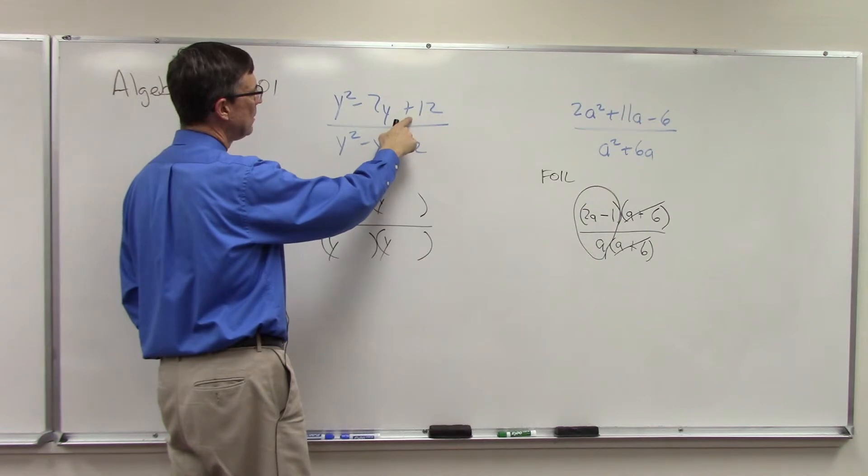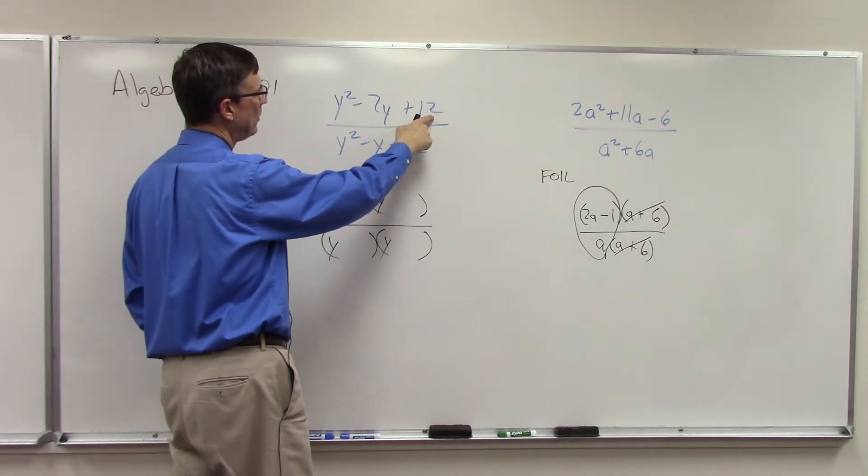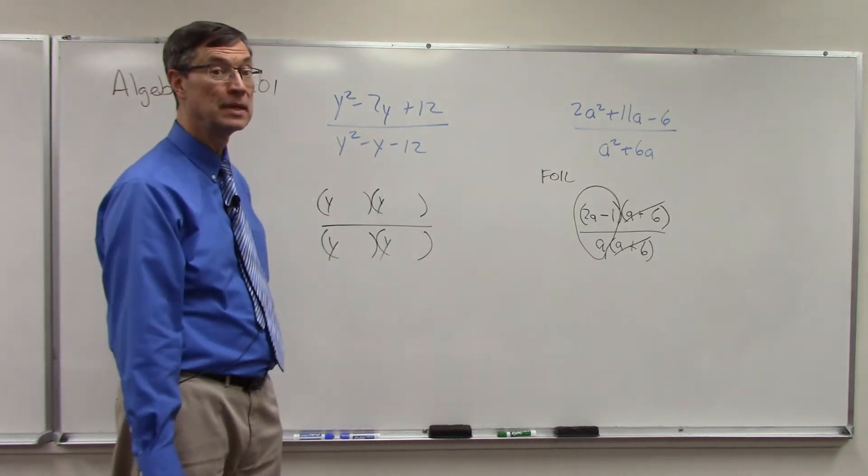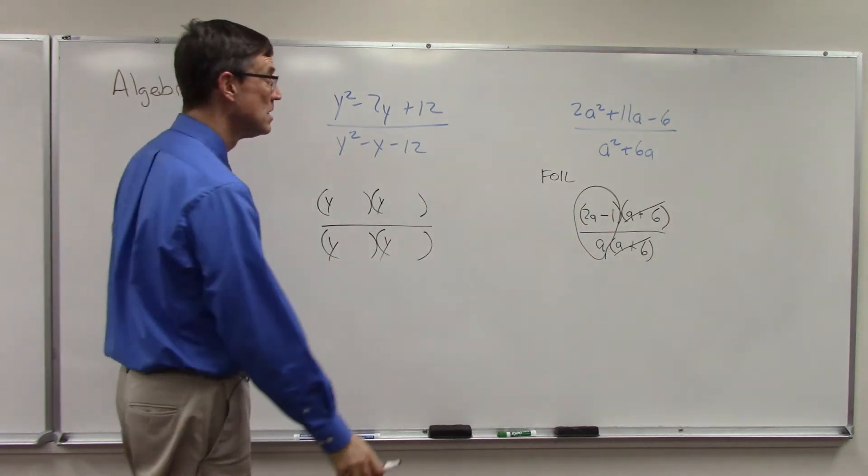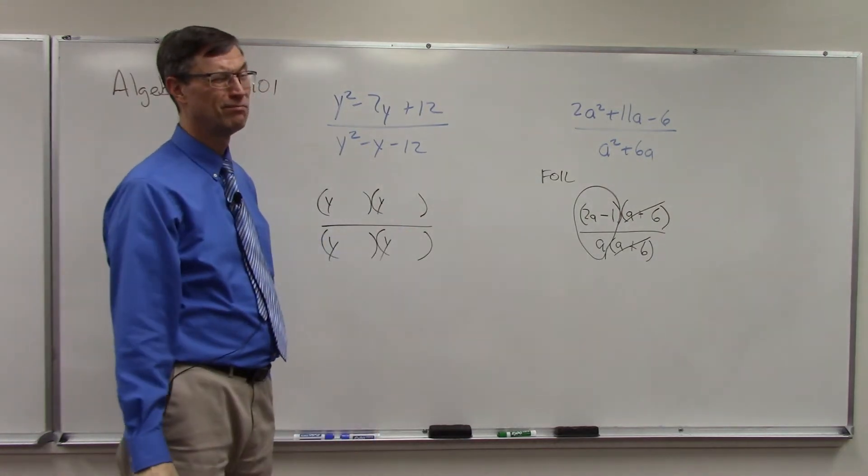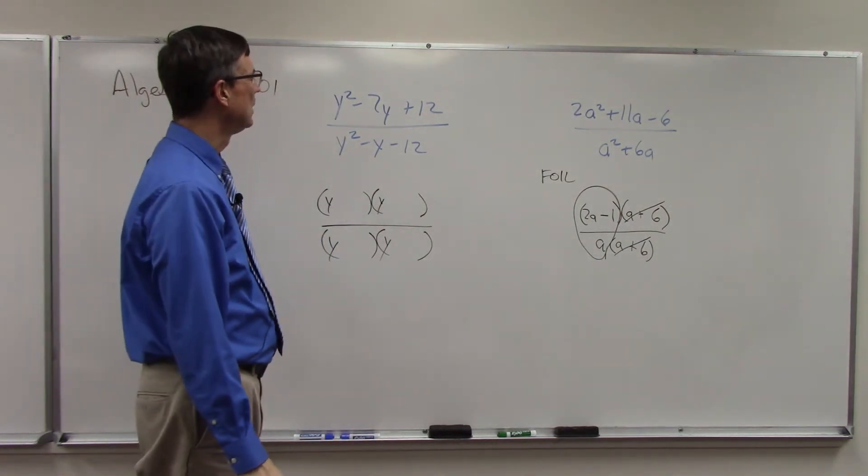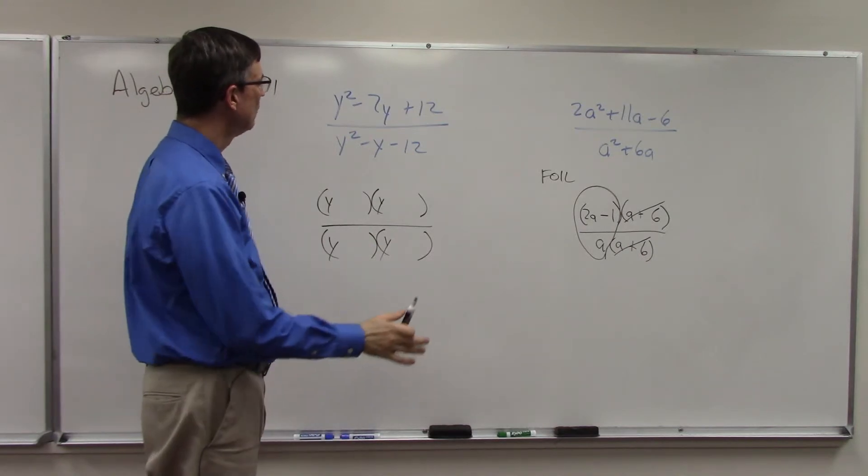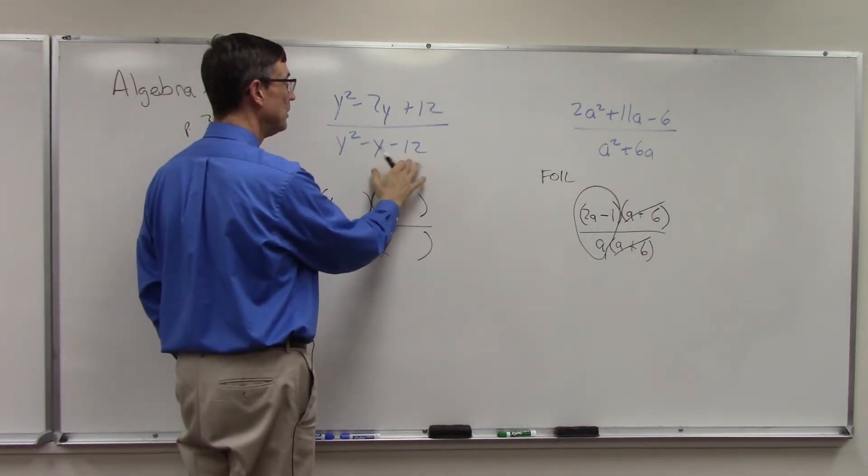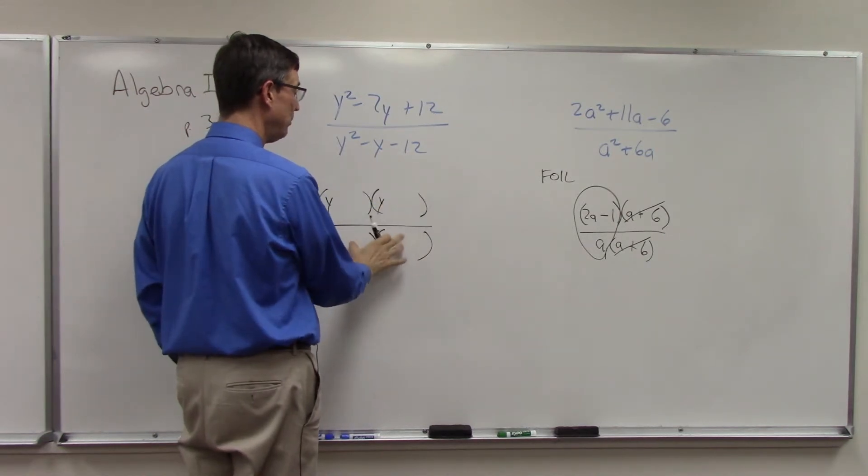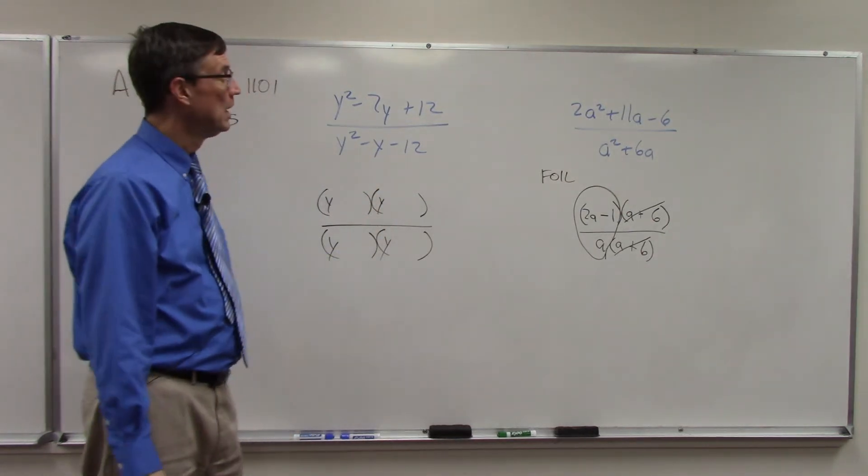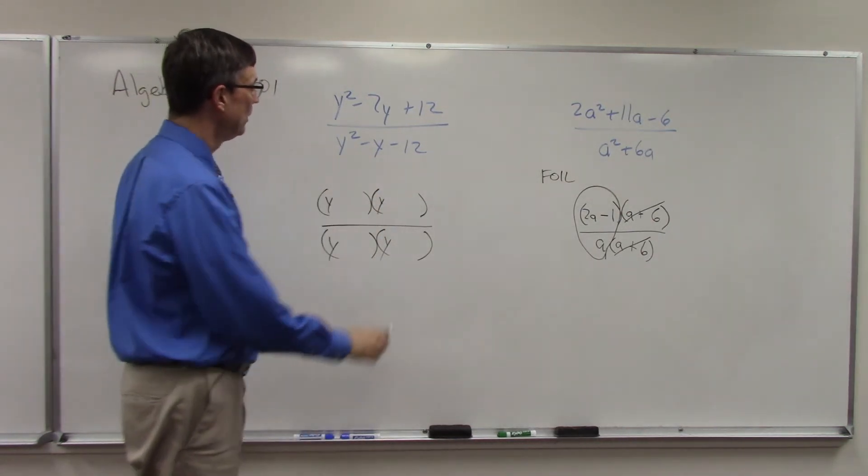So I have y and y down here, y and y. That part's easy. I need to multiply two numbers together to give me 12, and when I add them, I'm going to get negative 7. So I think you can figure out what goes there—3 and 4, right? You got to figure out positive negative. Guess what, down here, same thing. 3 and 4 give me 12, and I think I can somehow, by playing with the signs positive and negative, get a negative 1y.